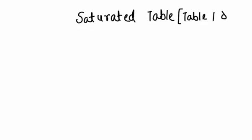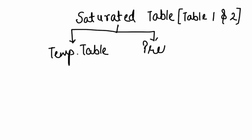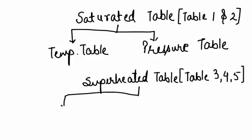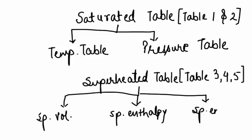Going back to the steam table: tables 1 and 2 are for the saturated region, which contain temperature table and pressure table. The superheated table has three tables: specific volume, specific enthalpy, and specific entropy.